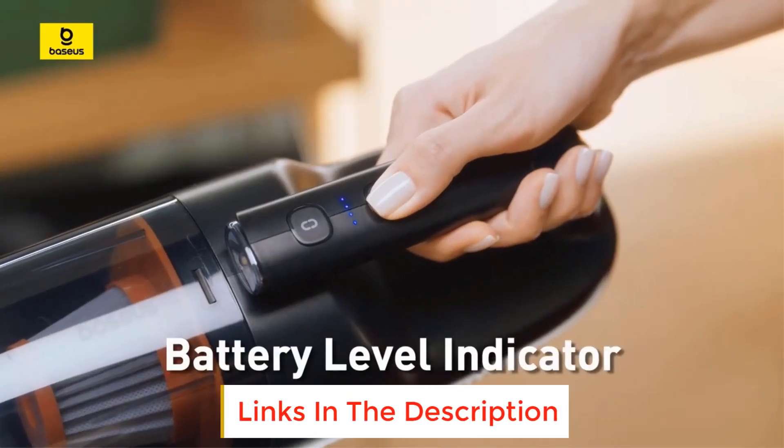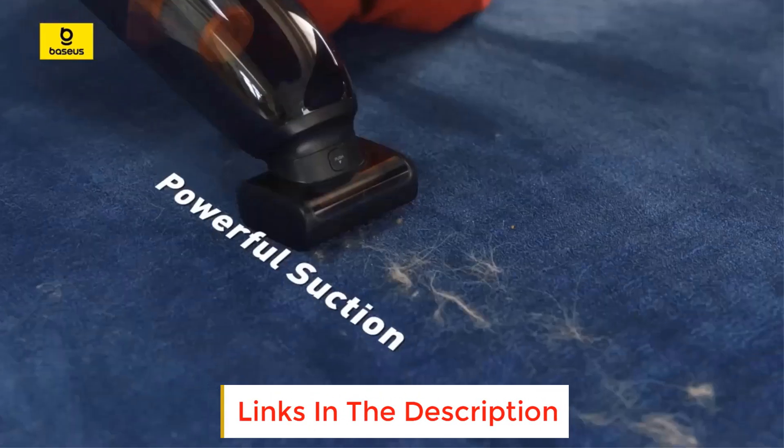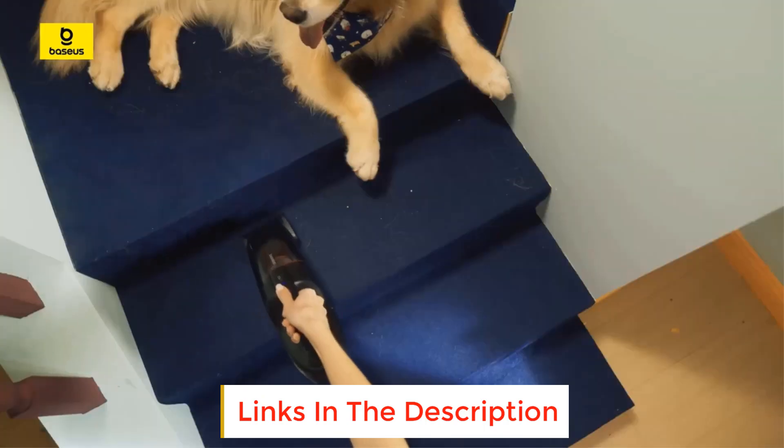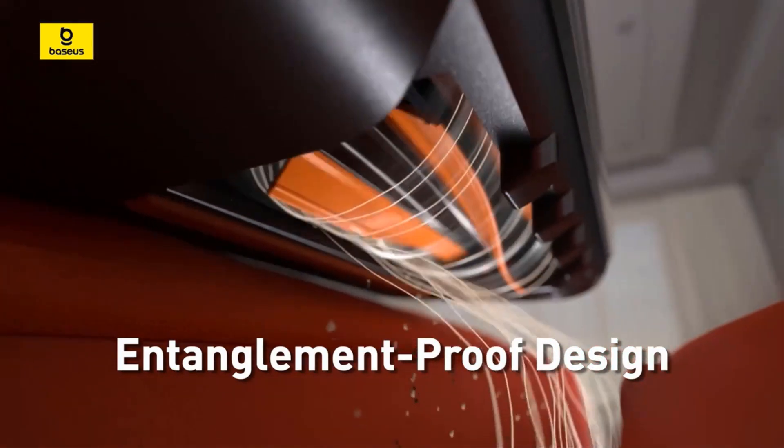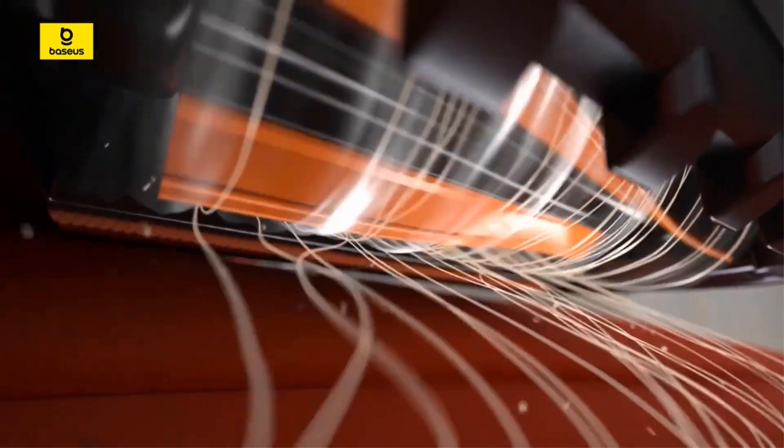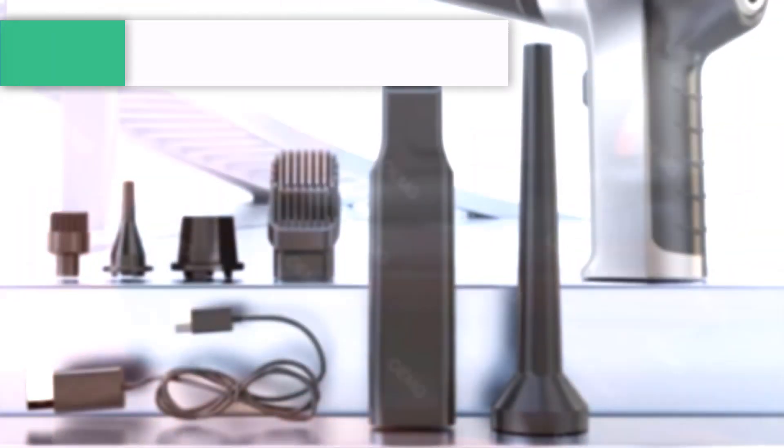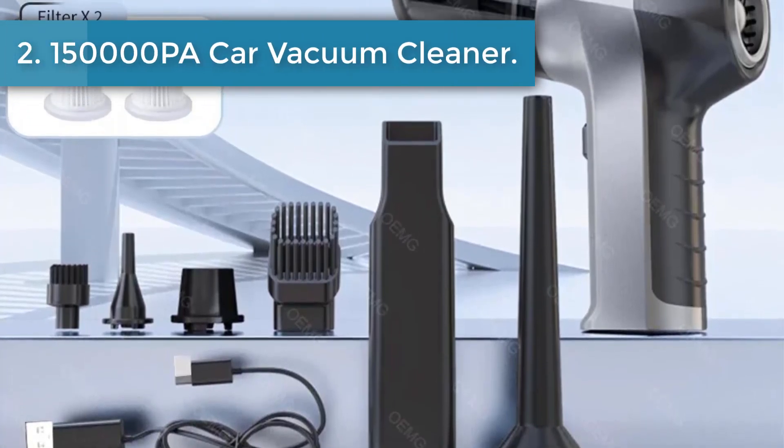For cleaning keyboard, machine, window rails, car seat, car air vent. With independent switch, can be used as emergency light. Number two: 150,000 PA car vacuum cleaner.